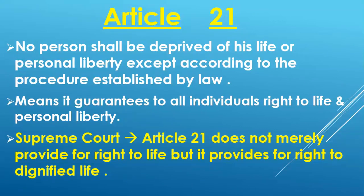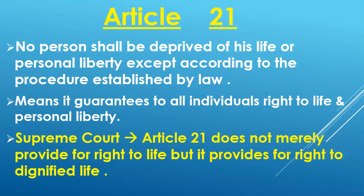What does it mean? Its first meaning is that government cannot take away the life of any individual — government cannot kill any individual. Its second meaning is that government cannot take away the personal liberty of any individual, meaning government cannot imprison any person. Its third meaning is that no individual can take away the life of any other individual — no person can kill another person. Its fourth meaning is that no person can make any other person captive, meaning no individual can take away the personal liberty of another.